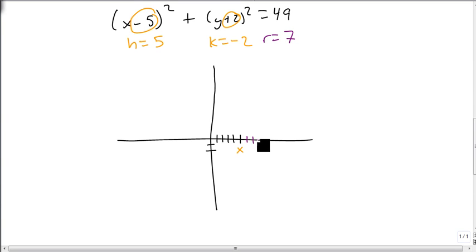Then we're going to go to the right 1, 2, 3, 4, 5, 6, 7. Go up 1, 2, 3, 4, 5, 6, 7. Notice these are all from the center point. To the left 1, 2, 3, 4, 5, 6, 7, and down 1, 2, 3, 4, 5, 6, 7.